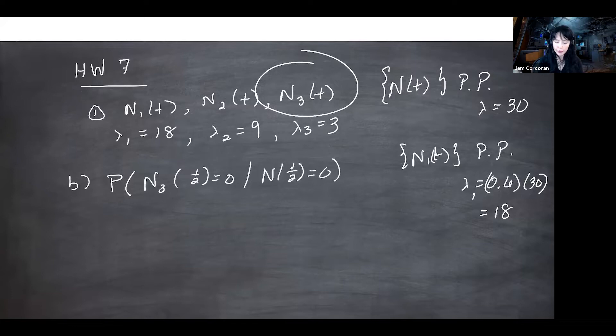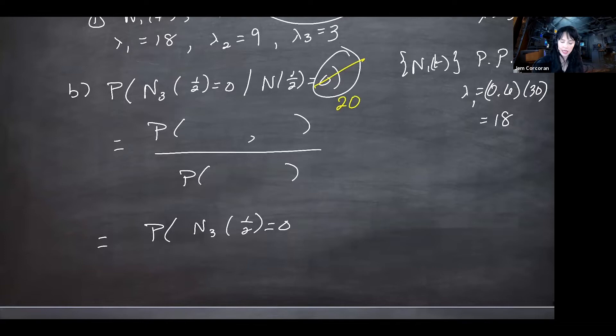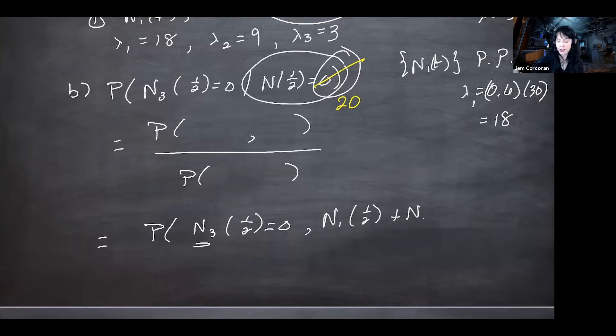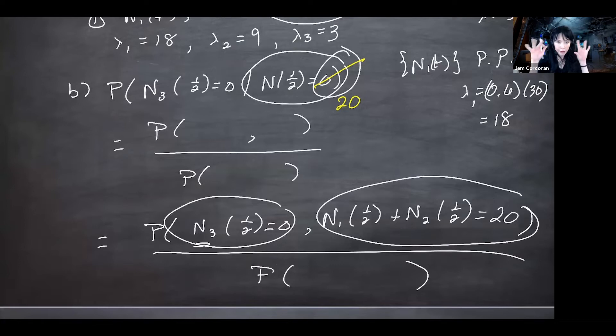One way is to use the binomial approach where a mortgage transaction is a success and a non-mortgage transaction is a failure. Or you can write it out as a probability over a probability, rewriting the numerator so you can split things up. If N3(1/2) = 0 and N(1/2) = 20, you rewrite the condition to get rid of N3 — saying N1(1/2) + N2(1/2) = 20 — and now this is independent of N3 since all three processes are independent of each other.